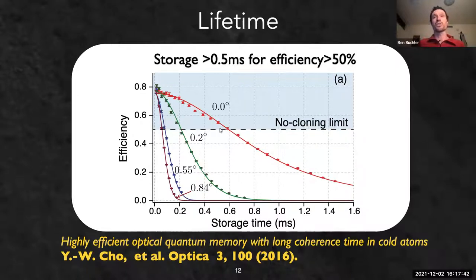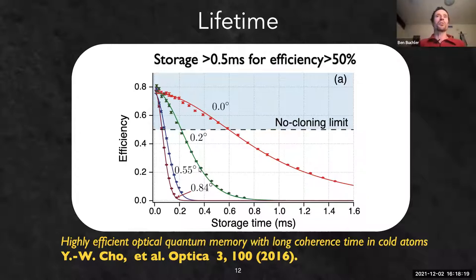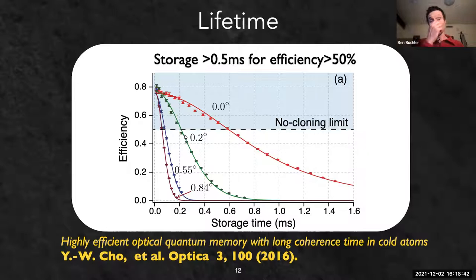We have a 1/e storage time of around one millisecond at best, with many cases above the no-cloning limit of 50 percent. Above 50% efficiency assures the recalled state is the best possible representation of the stored state. The angles shown are between the probe and control field - best storage occurs when they are collinear, but having an angle helps separate probe from control, which is needed to filter the strong control light from a weak single-photon probe.